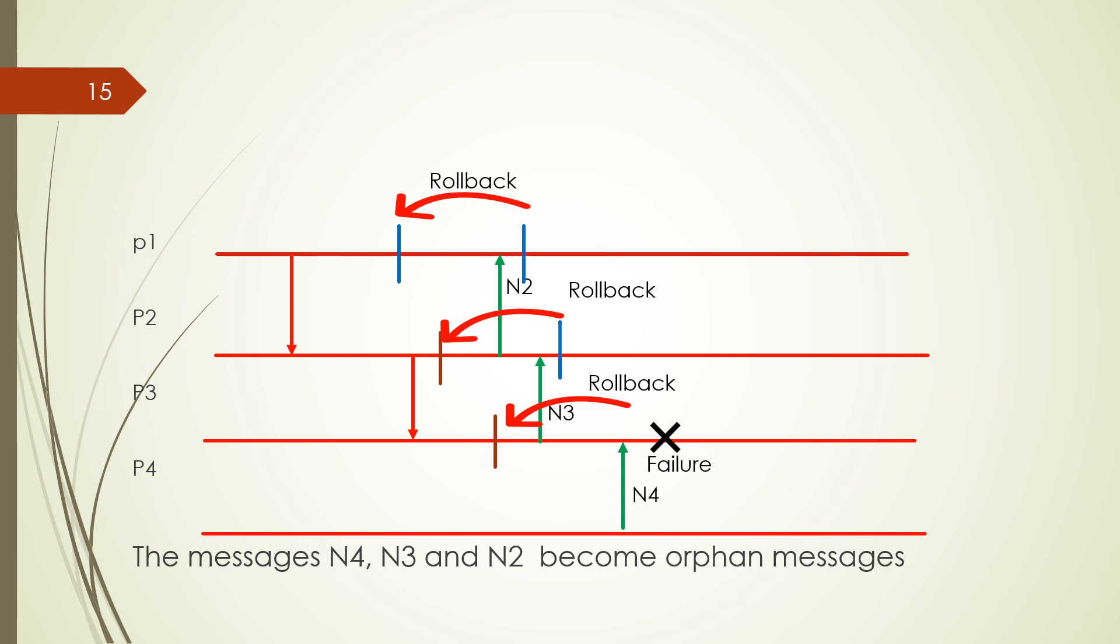So domino effect: if P4 has a failure, the rollback occurred in one process triggers the rollback of another process. The rollback occurred in P4 triggers the rollback of P3. The rollback of P3 triggers the rollback of P2. The rollback in P2 triggers the rollback of P1. It is the domino effect.